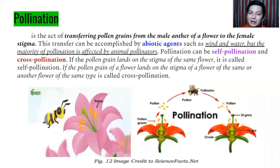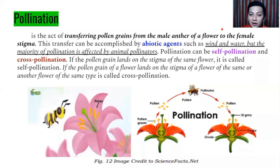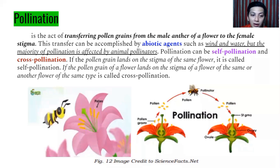The most important part of plant reproduction is pollination — the act of transferring pollen grains from the male anther of a flower to the female stigma. This transfer can be accomplished by abiotic agents — non-living factors such as wind and water — but the majority of pollination is done by animal pollinators. Pollination can be self-pollination, where pollen lands on the stigma of the same flower, or cross-pollination, where pollen from one flower lands on the stigma of another flower of the same type.